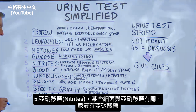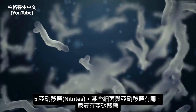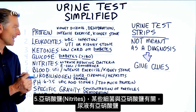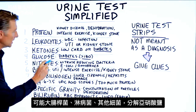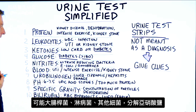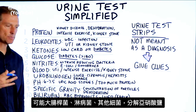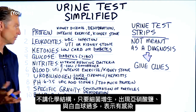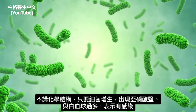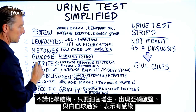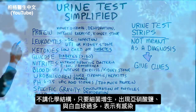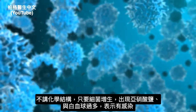Number five, nitrites. There are certain bacteria that are involved with nitrites. So if there's nitrites, that means there could potentially be E. coli, gonorrhea, or some other bacteria that is breaking down nitrates. Certain bacteria, if they're thriving, will increase this. So if you have nitrites and leukocytes together, that could indicate an infection.